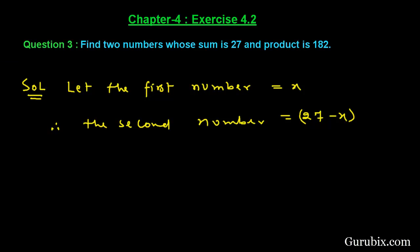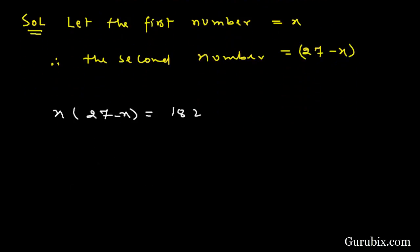We are also given that the product of these two numbers, this means x into (27 - x), is equal to 182.